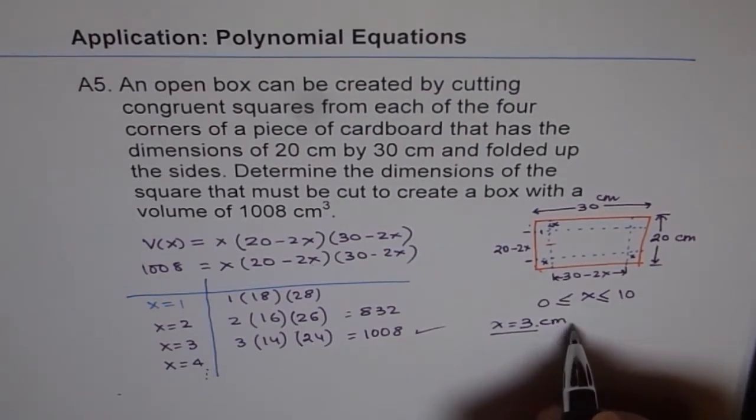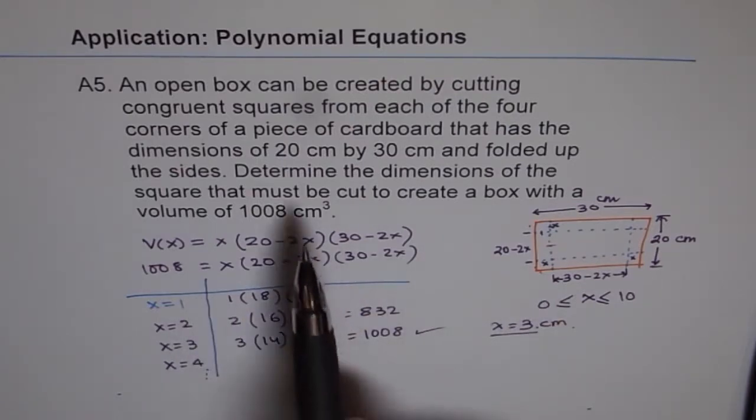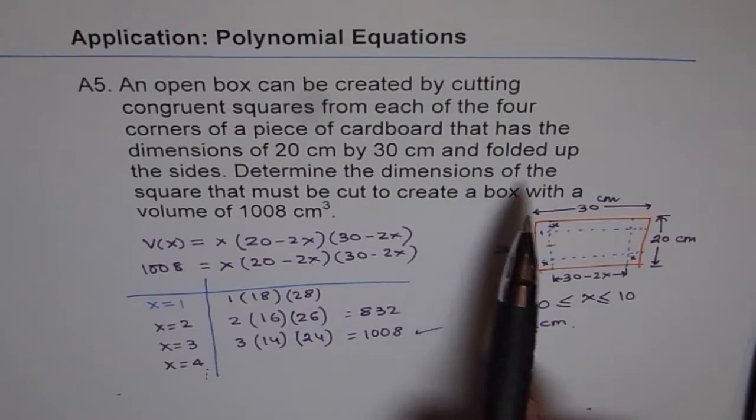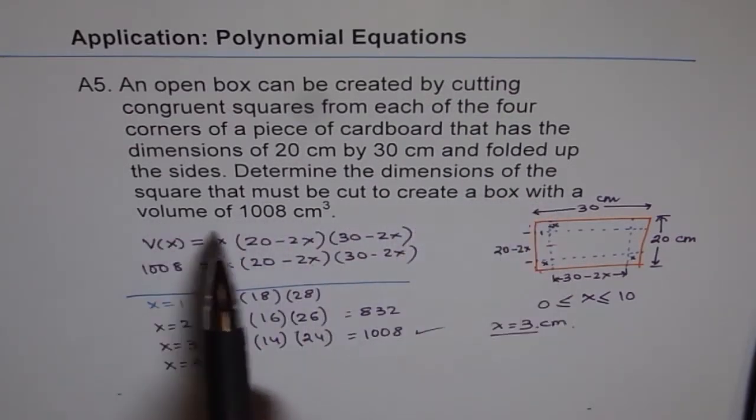So that is my answer. So I can do by trial and error straight in the formula itself. I need not expand and do it. Note one more thing. It says determine the dimensions of the square that must be cut to create a box with this volume.